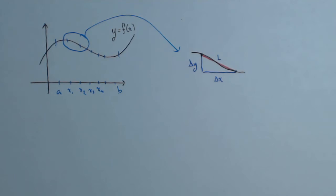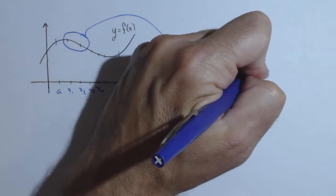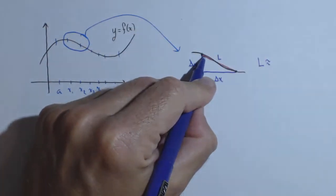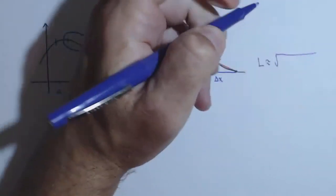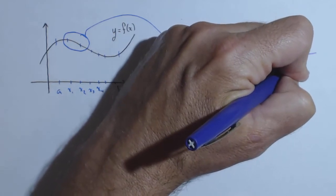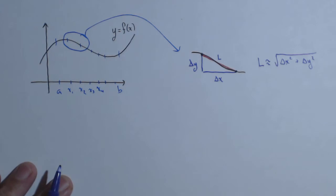Well, the length of that curve, by the Pythagorean theorem, L is approximately, so L is the length of the black curve. It's approximated by this red curve. It's approximately the square root of delta x squared plus delta y squared by our Pythagorean theorem. So that's approximately the size of our slice.